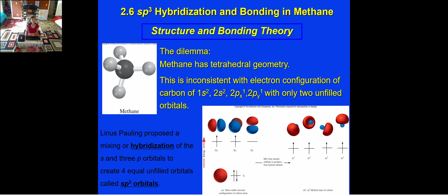To understand the tetrahedral structure of methane, we need to look at the atomic electron configuration of the carbon atom. Carbon has the electron configuration 1s2, 2s2, 2p2. The two p electrons occupy px and py orbitals. This seems to give only two unpaired electrons — meaning carbon should bond with only two hydrogens. However, methane has four hydrogens, so we need something called hybridization.